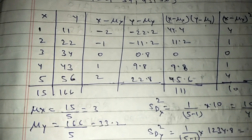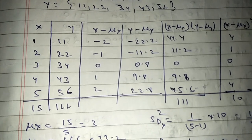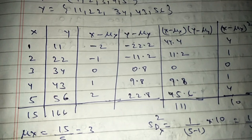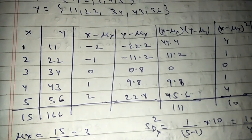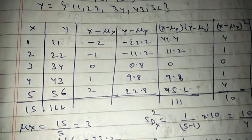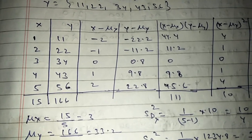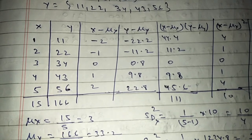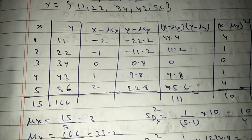Now you can go for the standard deviations. Variance is the square of standard deviation. To calculate the variance, for every element of x, subtract the mean of x. Then proceed with the calculation.